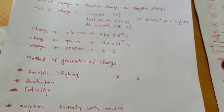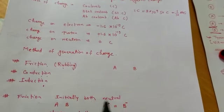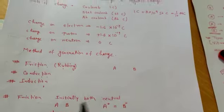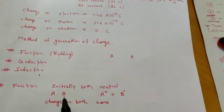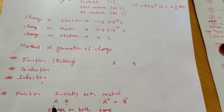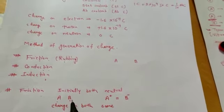The first method is friction. Initially, both bodies A and B are neutral — they have the same number of protons and the same number of electrons.